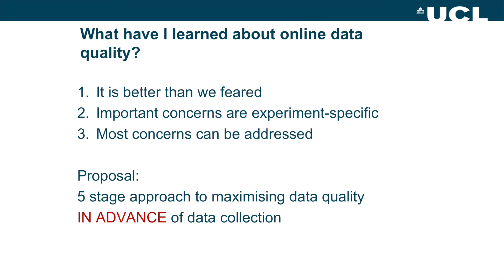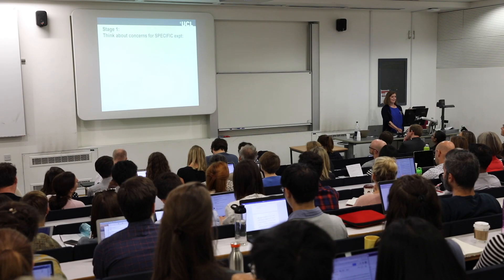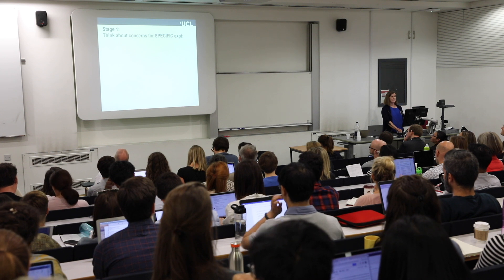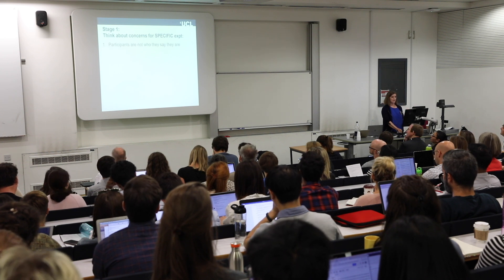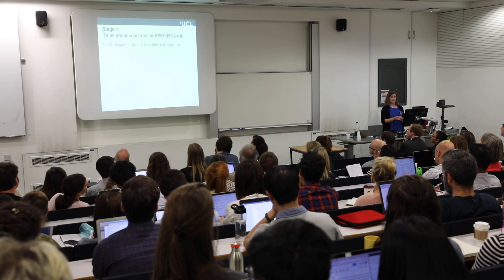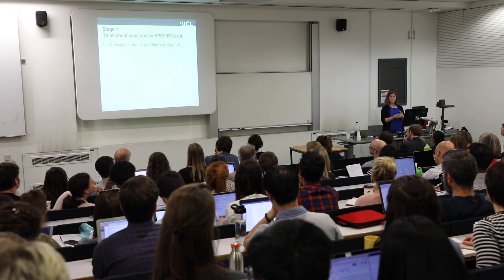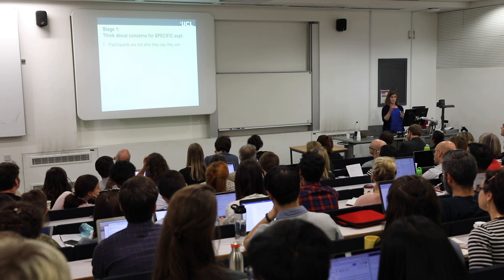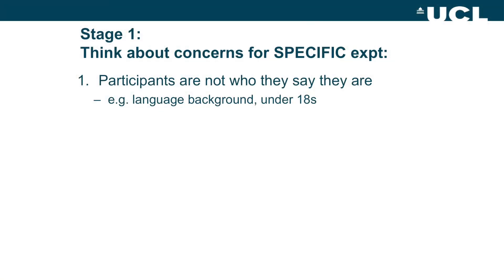Importantly, all of this is stuff you do before you get any data. The first thing is to think about your specific experiment: what are you worried about? From Twitter surveys and discussions, people generally worry about three things. The first is that participants are lying — they're not who they say they are — and that concern manifests differently for different experiments.